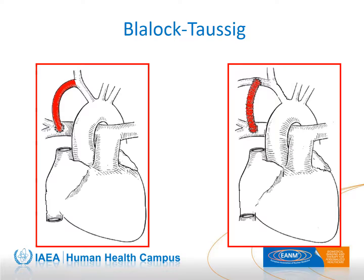The classic Blalock-Taussig shunt connects the subclavian artery with the pulmonary artery in order to increase lung perfusion. The modified Blalock-Taussig shunt uses an artificial conduit connecting the subclavian artery and the pulmonary artery. It is used as a temporary measure to increase pulmonary blood flow, most often when complete correction of subvalvular right ventricular outflow tract stenosis has to be postponed. Manipulation of the pulmonary artery can lead to damage in some branches, with a sectorial reduction in pulmonary blood flow that persists even after removal of the shunt.